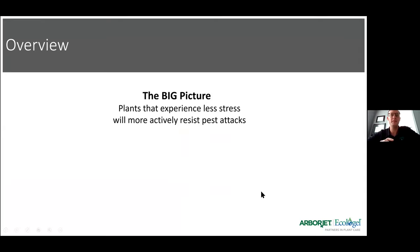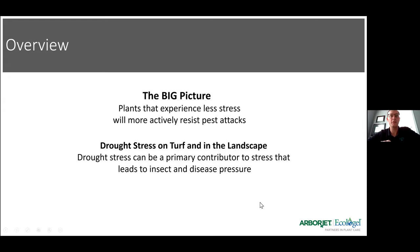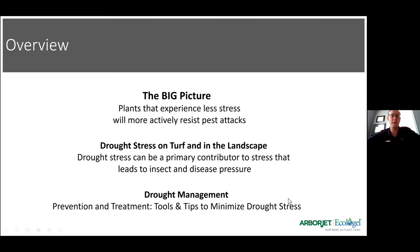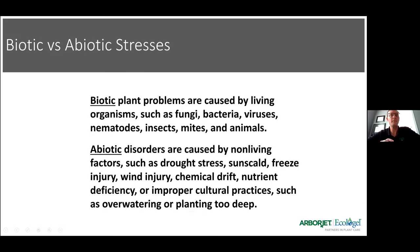The big picture here: plants that experience less stress will actively resist pest attacks. Drought is one of our biggest stressors — it's almost unavoidable in most of our geographic areas at some point in the year. Drought stress on turf and in the landscape can be a primary contributor to stress that leads to insect and disease pressure. Plants under drought are going to be less tolerant of all the factors that create disease and more susceptible to insects.